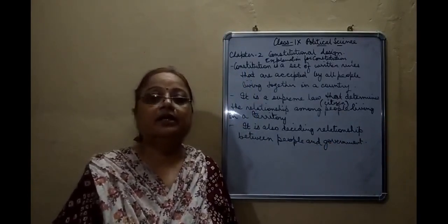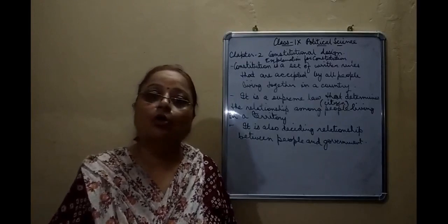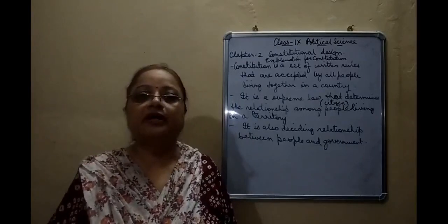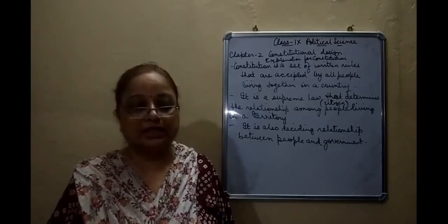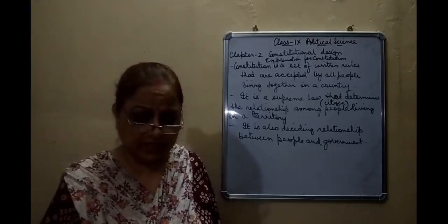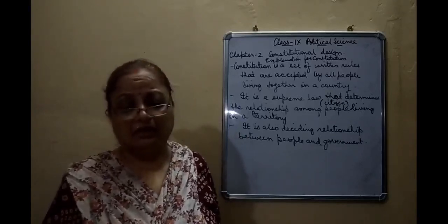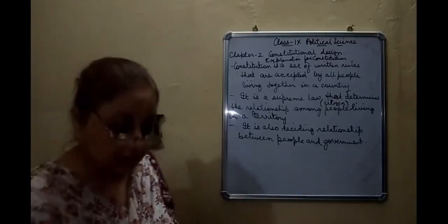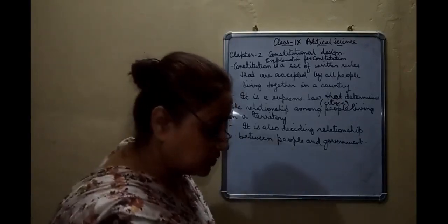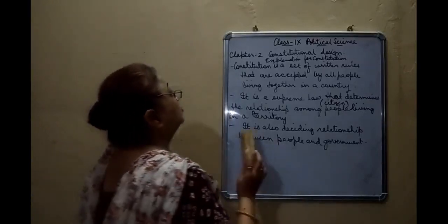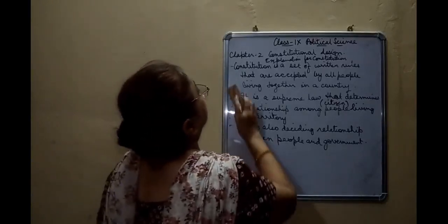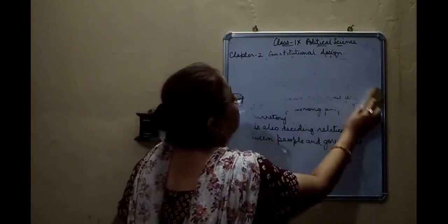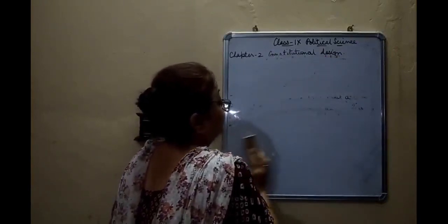The government cannot go against the principles of the constitution. The government very much has to follow the constitution. Finally, what does a constitution do? The explanation has three points — please remember all these three points.